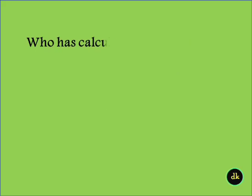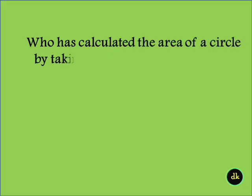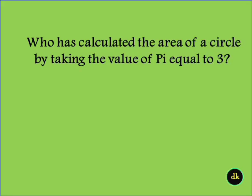Who calculated the area of a circle by taking the value of Pi equal to 3? The Babylonians.